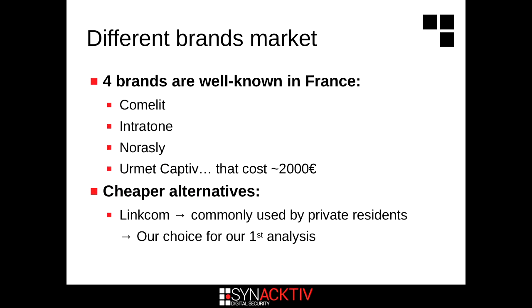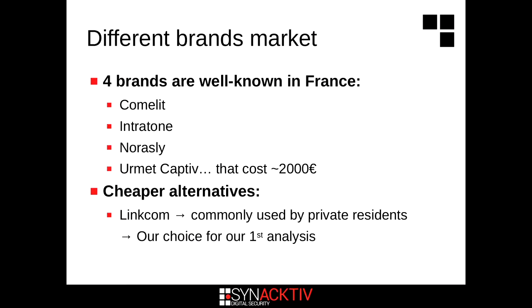In France, there are five well-known brands: Comelit, InfraTone, NoirLC, and HermitCaptive. They cost a lot of money — starting from 2,000 euros, and more buttons means more cost. For our first case, we chose the LINCOM IDP GSM, which is commonly used in private residences in Paris. During this presentation, we will also focus on the 3G intercom, which is used in many buildings today.